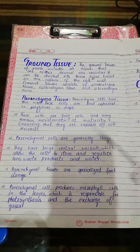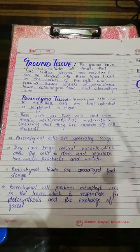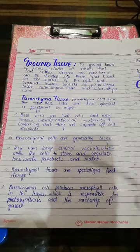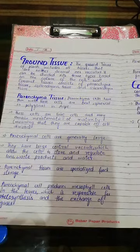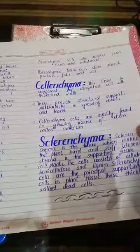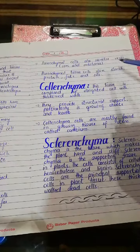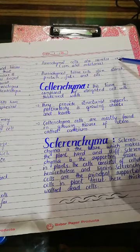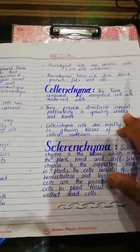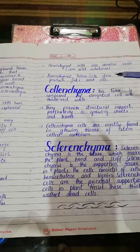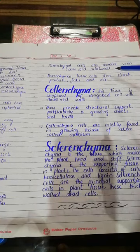Parenchyma cells produce mesophyll cells in the leaves, which are responsible for photosynthesis and exchange of gases. Parenchyma cells also secrete resins. Resins are semisolid substances.